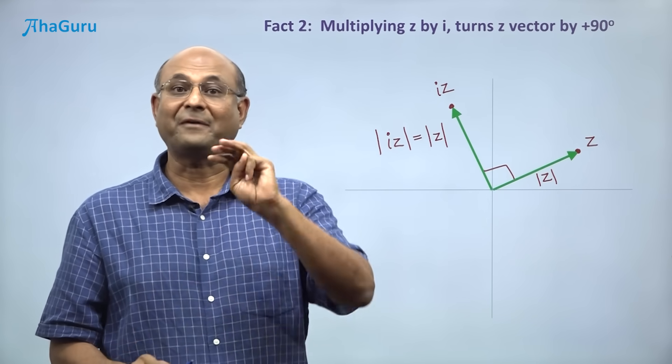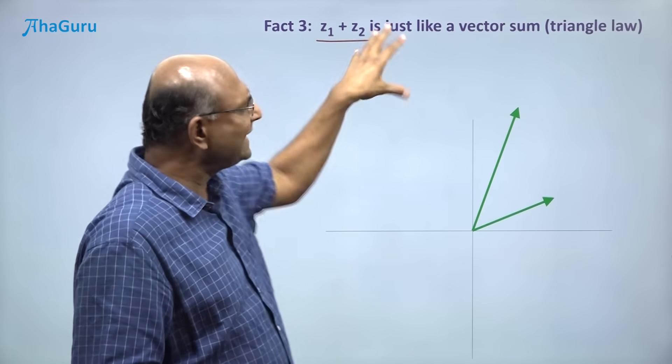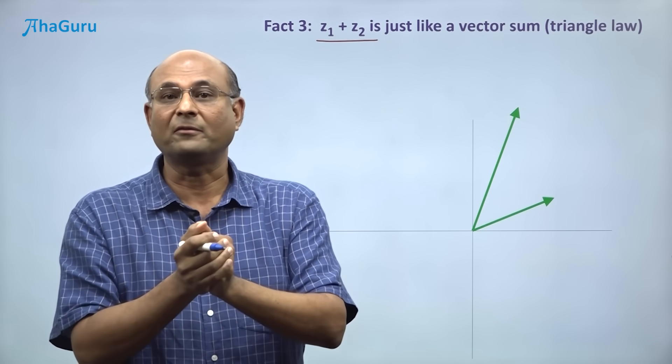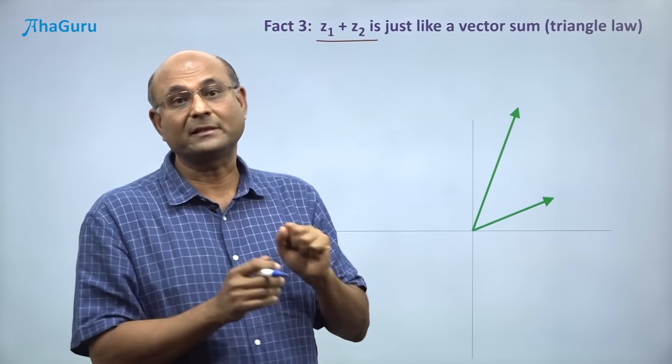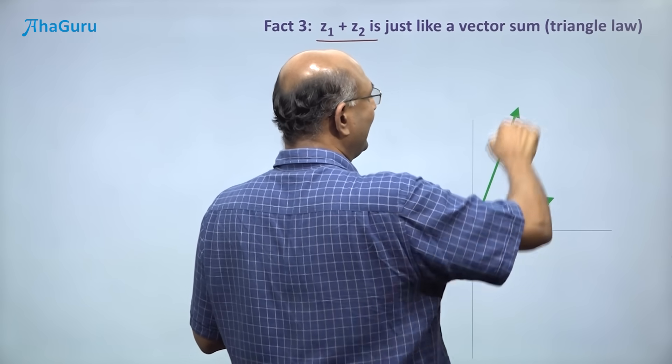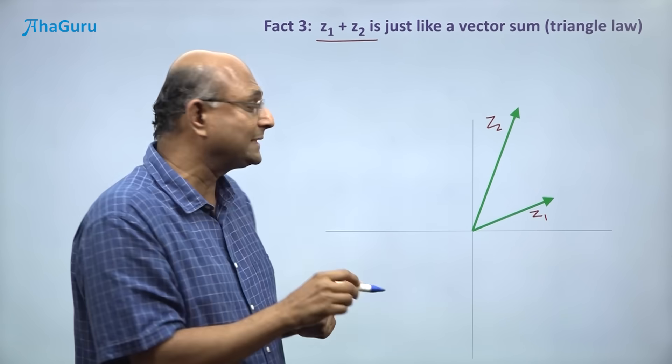Let us now look at Fact 3. When you are adding complex numbers z1 plus z2, it is the same as a vector sum. Like the triangle law for vectors, we can do the same thing with complex numbers.